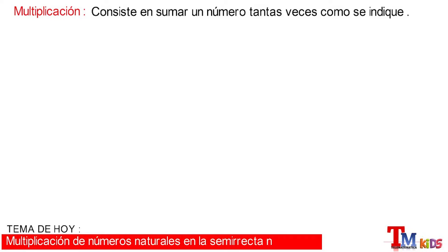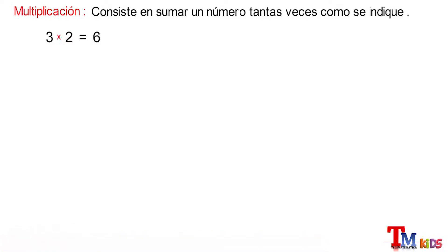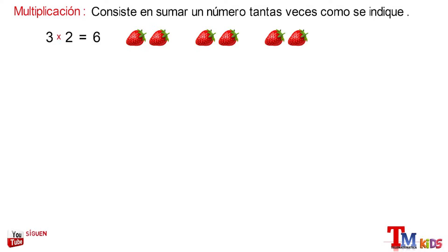For example, 3 multiplied by 2 is equal to 6. This is translated in two ways: first, as 3 times 2, or as 2 times 3.